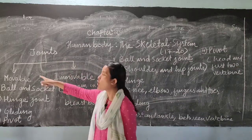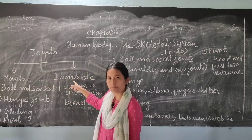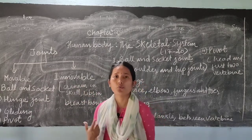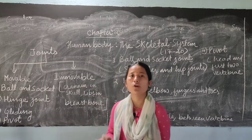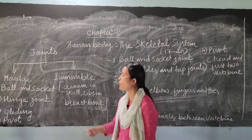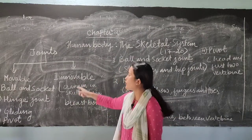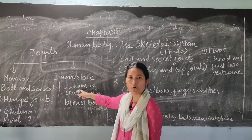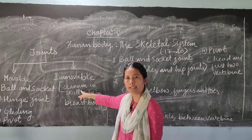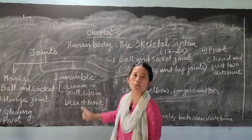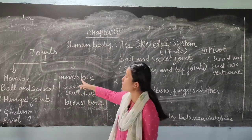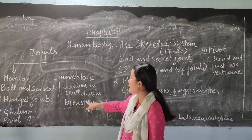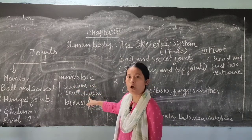Joints are of two types: movable and immovable. Immovable joints are those joints which do not allow the movement of body parts. Now, immovable joints are present in the cranium — the portion of the skull which protects your brain. They are also present in the ribs.